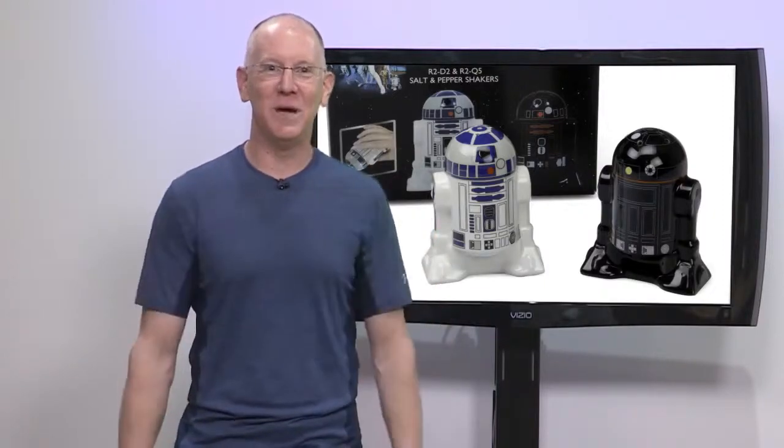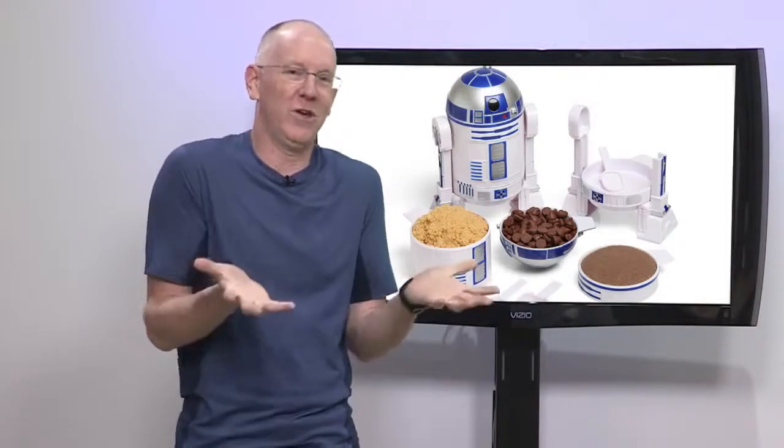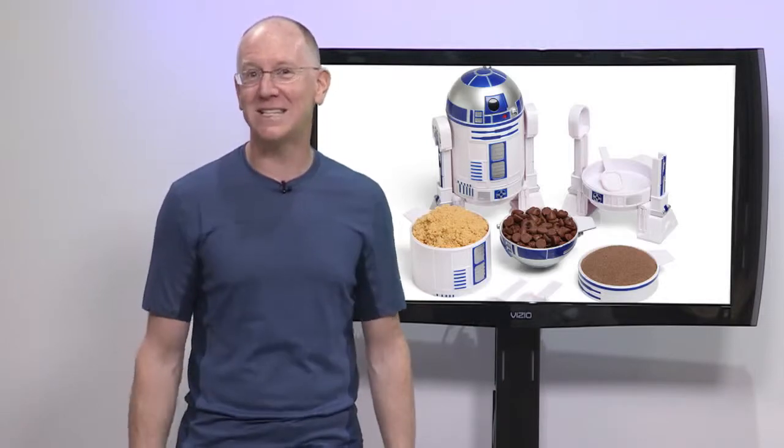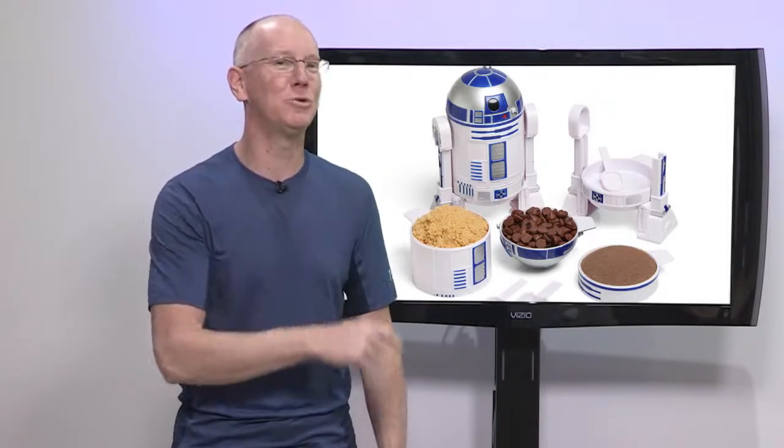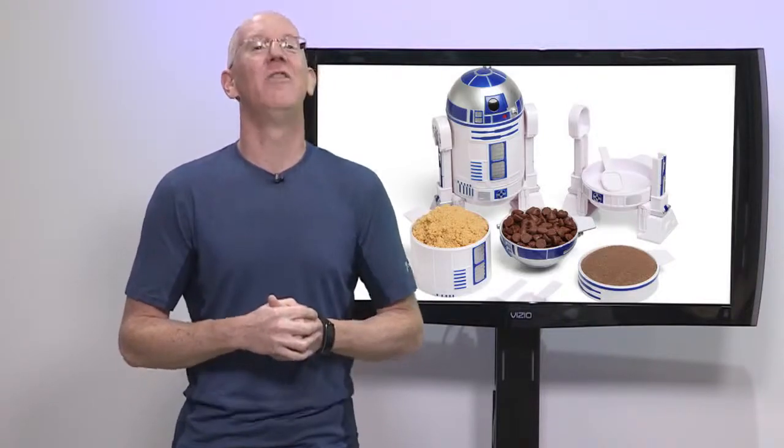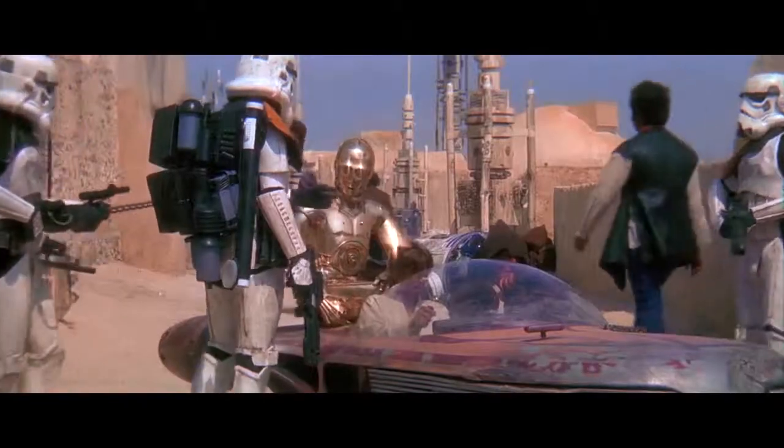Speaking of R2-D2, he also comes in the form of a $20 set of measuring cups. Okay, you have to disassemble R2 like a Jawa to use him, but with a body built from four nested measuring cups and detachable utility arms consisting of four nested measuring spoons, this is the droid you're looking for. Move along.